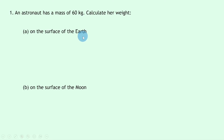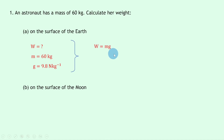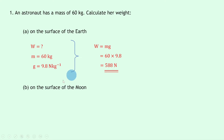For the earth, let's write down what we know from the question. We're trying to find the weight W, we know the mass m is 60 kilograms, and we know the gravitational field strength g on earth is 9.8 newtons per kilogram — you can find that on the data sheet. Writing down the equation relating weight, mass, and gravitational field strength: W = mg. Substituting in the numbers gives us 60 times 9.8, which should give you an answer of 588 newtons.